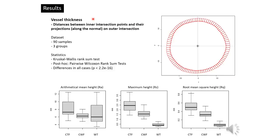The second analysis was based on the comparison of vessel thickness. Thickness was calculated as a distance between points on the inner intersection of the vessels and their projections on the outer part. Unlike the previous case, mean thickness values do not seem to be a good indicator of technique differentiation — wheel-thrown ceramics are not necessarily thinner than those made by different techniques. Nevertheless, the distribution of values for other parameters shows the same tendencies as before: the most standardized are wheel-thrown ceramics, followed by coiling with potter's wheel finishing, and then coiling with turntable finishing.